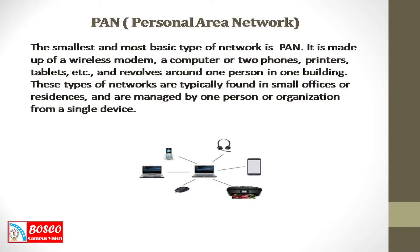The smallest and most basic type of network is PAN. It is made up of a wireless modem, a computer or two, phones, printers, tablets, etc., and revolves around one person in one building. These types of networks are typically found in small offices or residences and are managed by one person or organization from a single device.